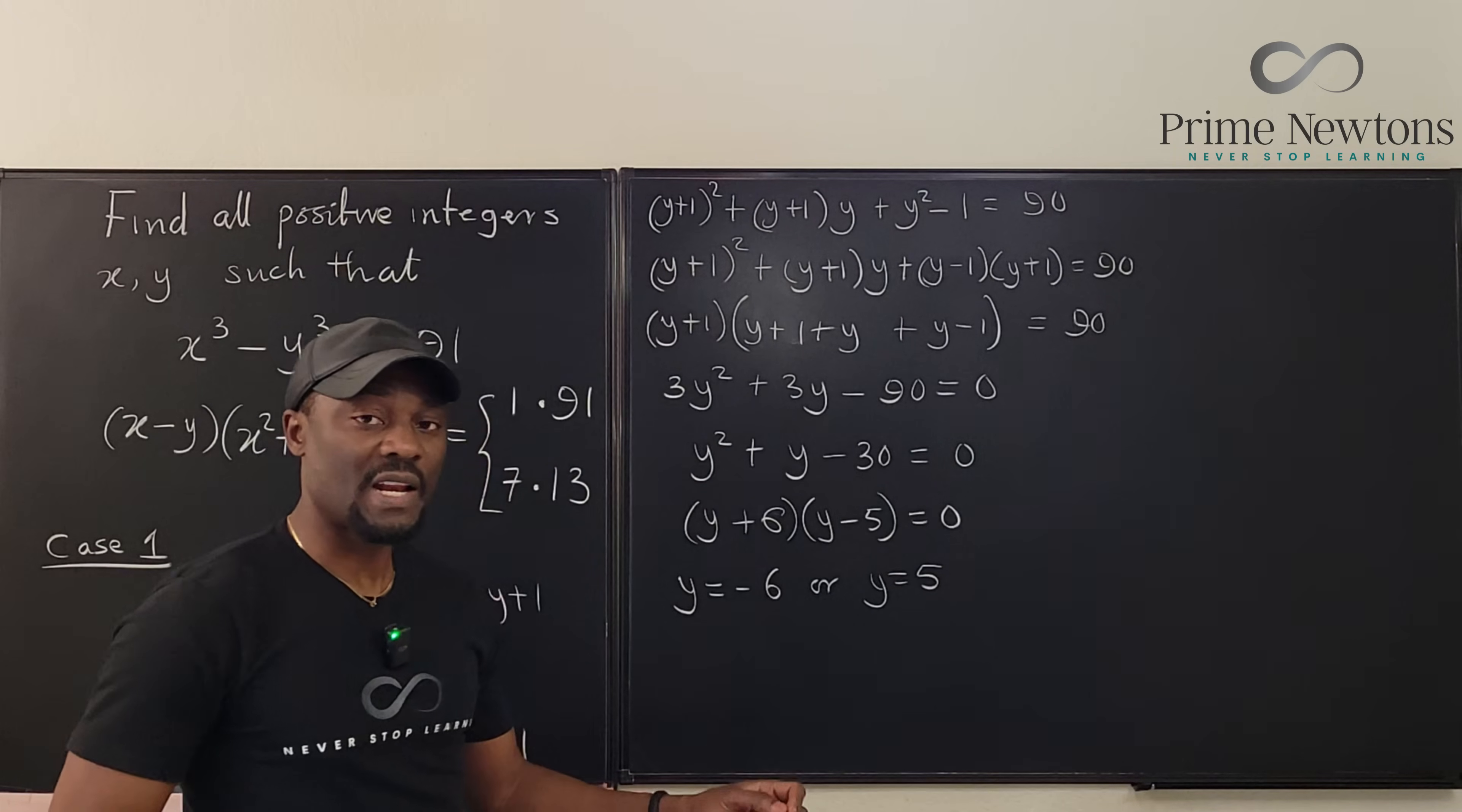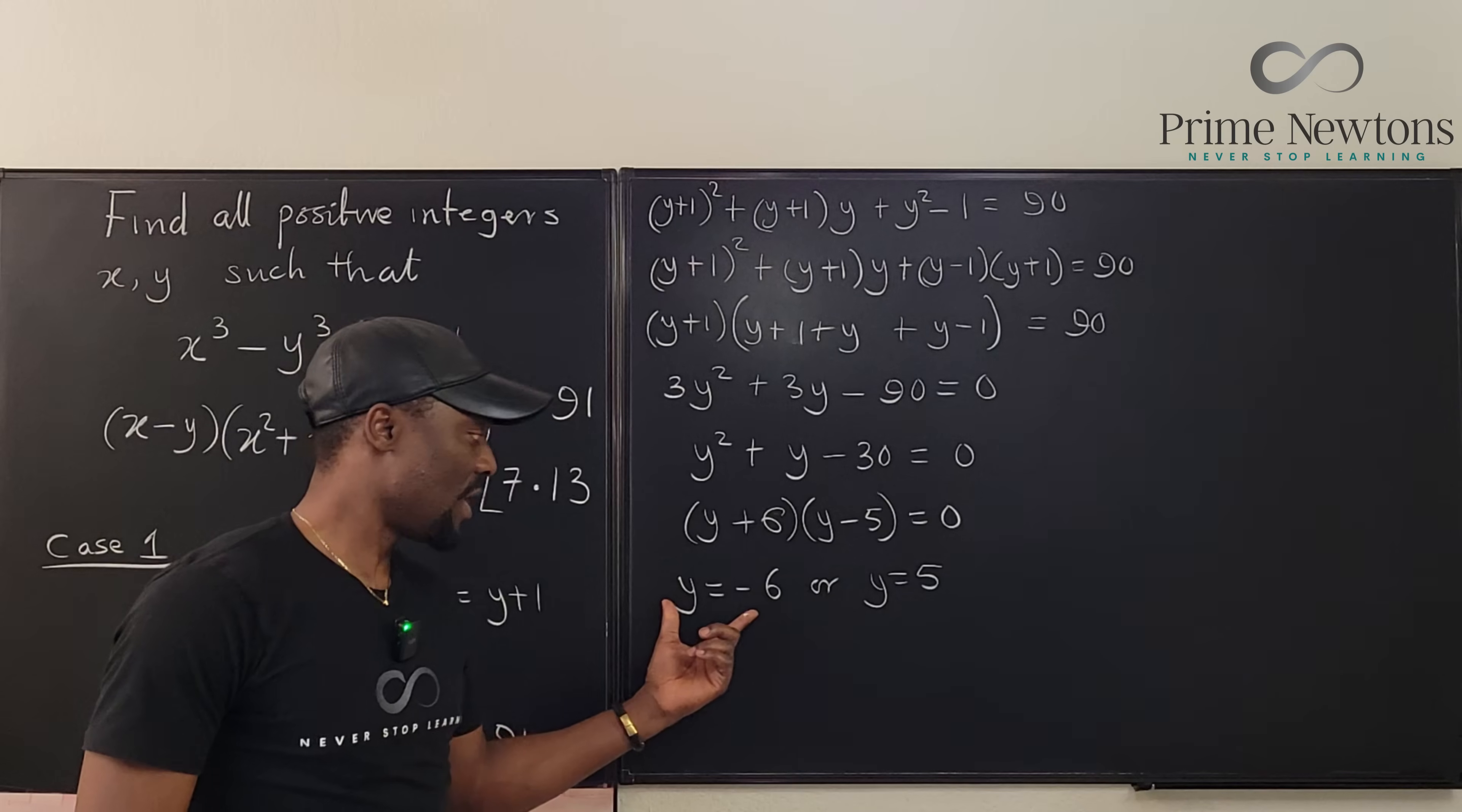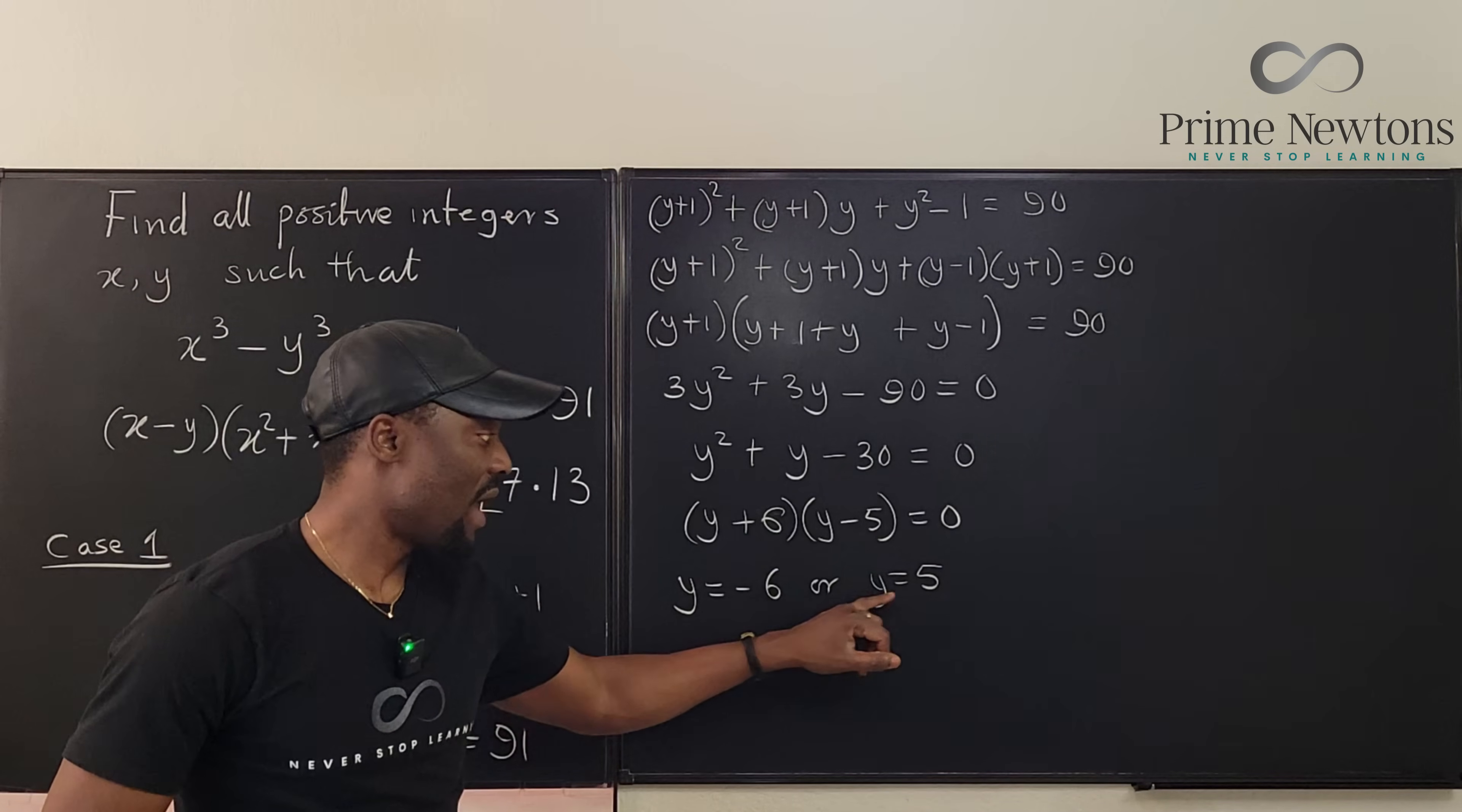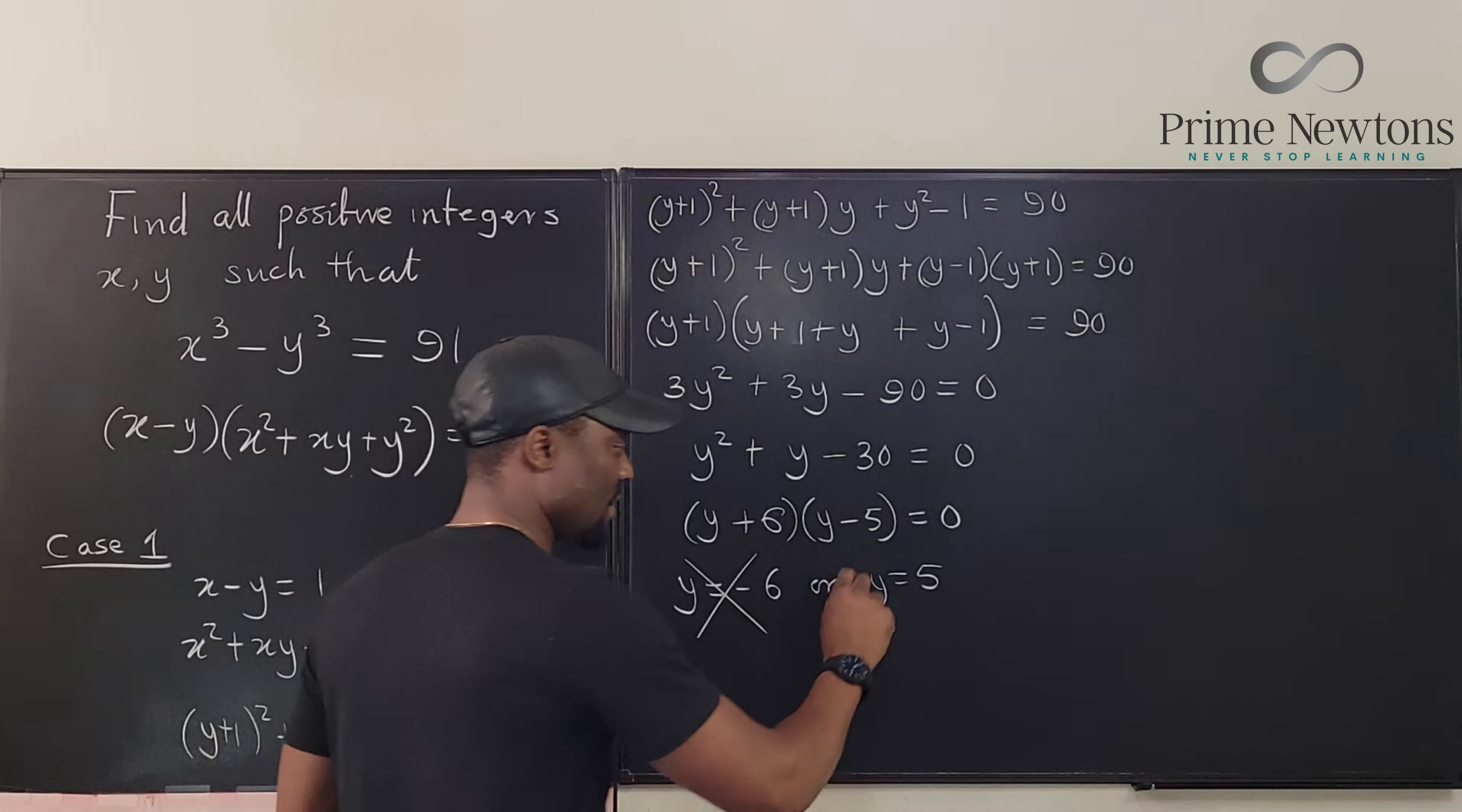We know that our x and y must be positive integers. This is not a positive integer. So it means we will not take this. We're going to take just this one, y equals 5. But we have to go back and check. If y equals 5 is the solution that we accept, this one is not a solution. We accept this one.